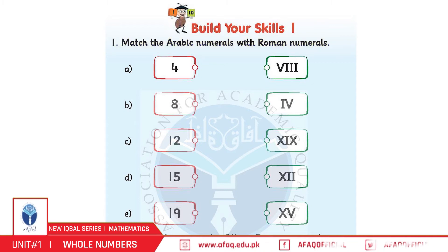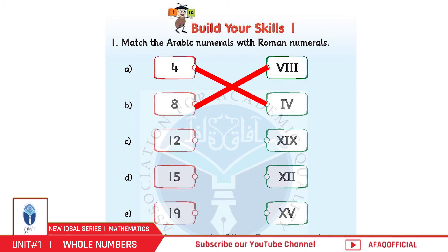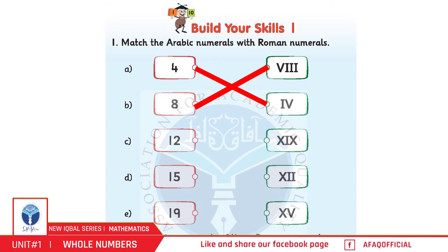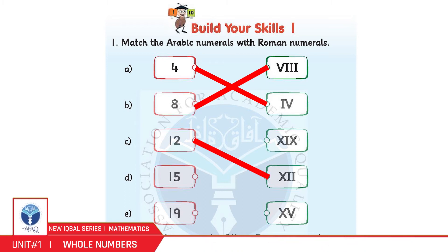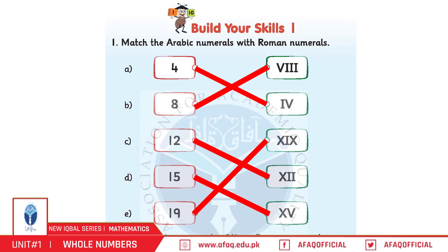A: 4 — match with IV (4th from top going down). B: 8 — match with VIII (4th from top). C: 12 — match with XII (4th from top). D: 15 — last number going down. E: 19 — third number going down is 19.